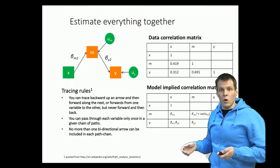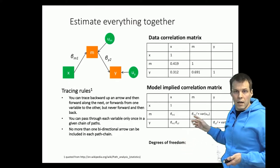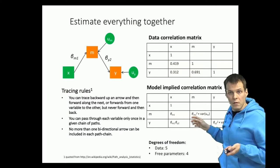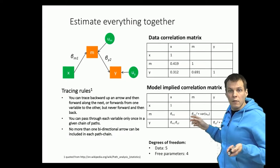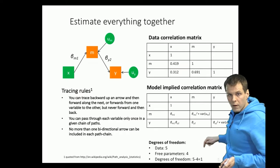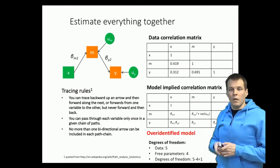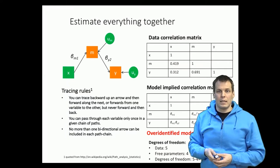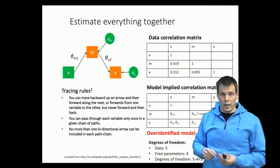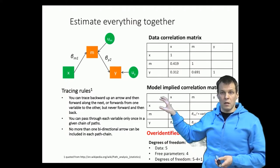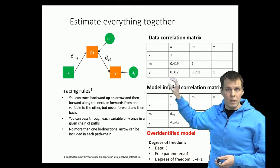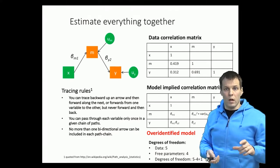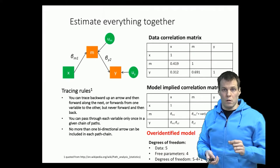This model has a positive degree of freedom. The data are the same — five units — but now we only estimate four parameters: two regression coefficients and two error variances. So we have one degree of freedom, and we call this an over-identified model. Generally, in an over-identified model we cannot make the model-implied correlation matrix exactly equal the data correlation matrix; instead we make it as close as possible.